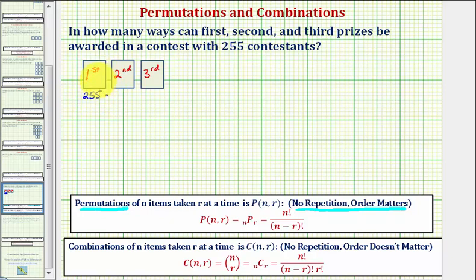Now assuming the first place prize has already been awarded, there would only be 254 ways to assign the second place prize, again because someone already won the first place prize. We're assuming a contestant cannot win more than one prize. Then there would be 253 ways to assign the third place prize, again because two contestants have already won the first and second prizes.